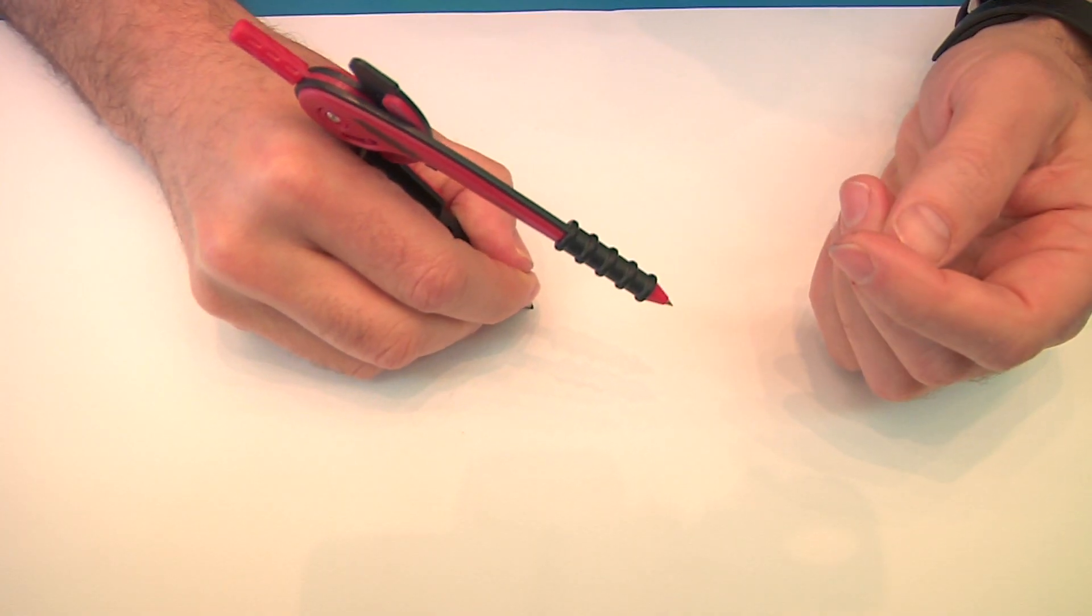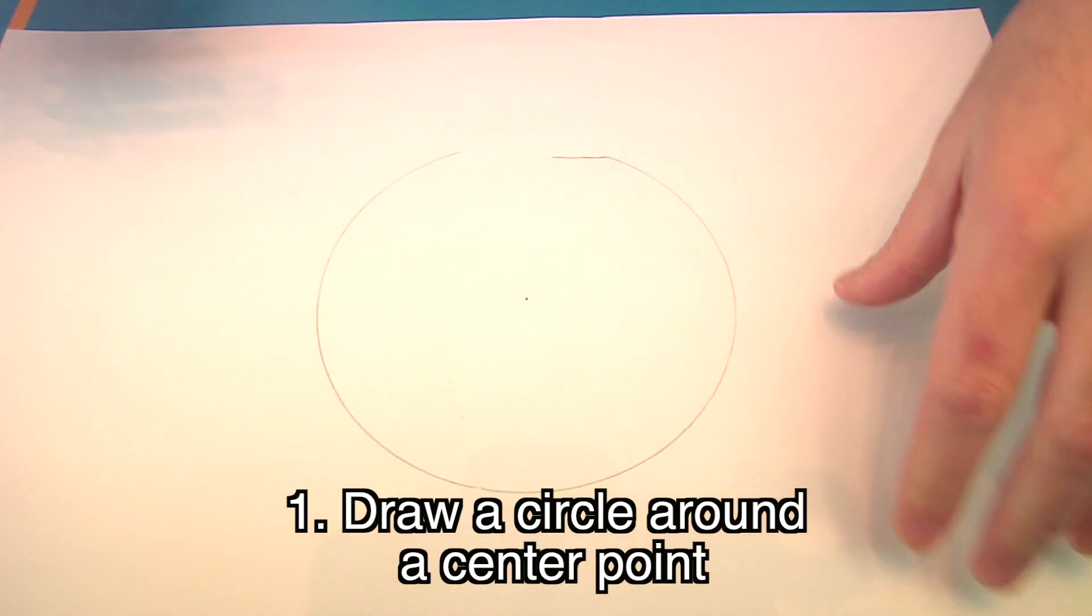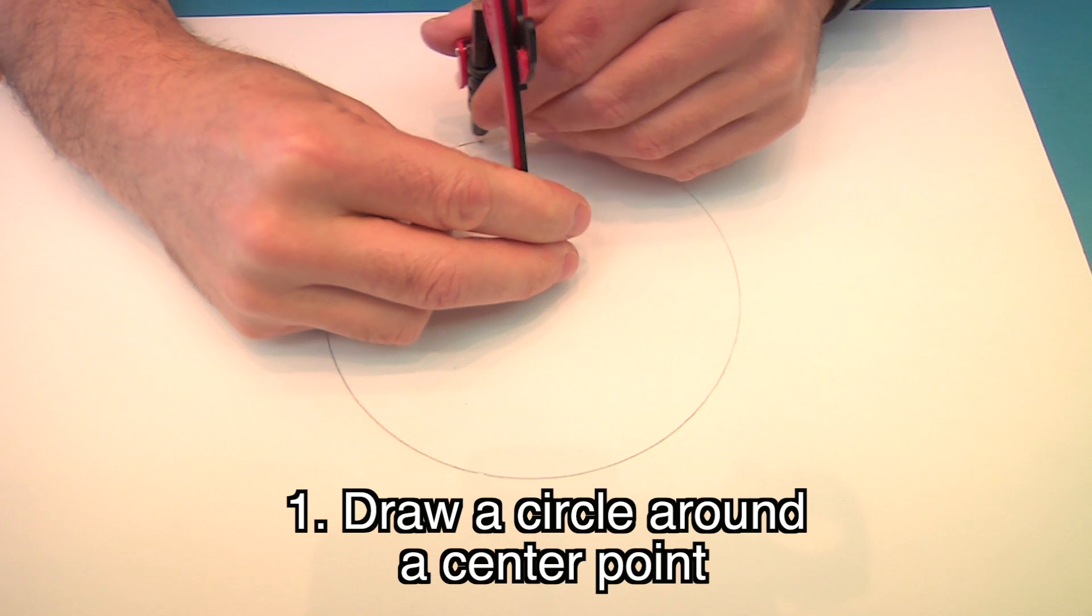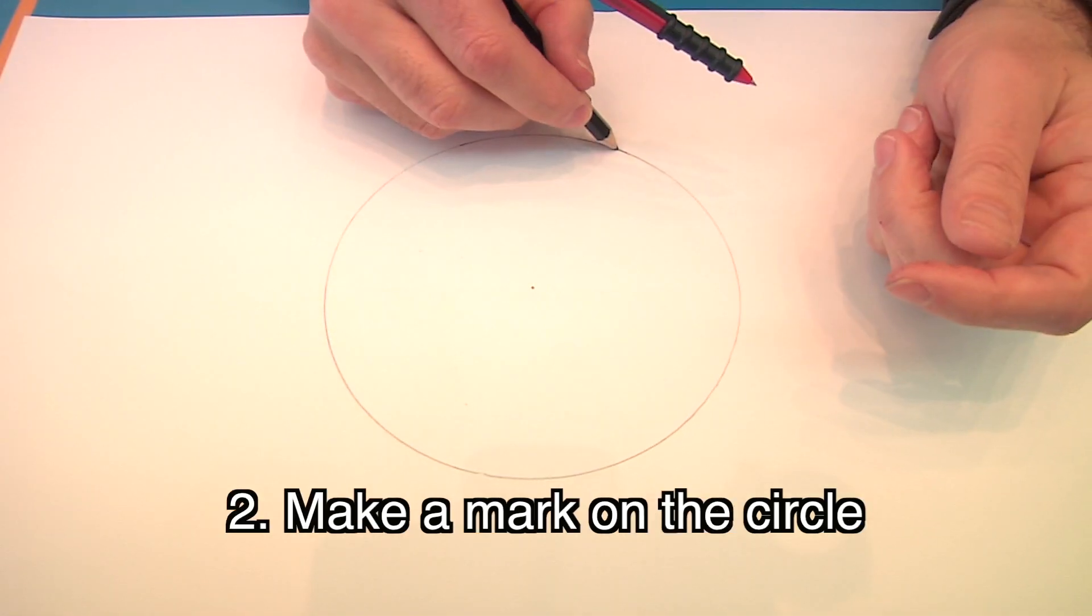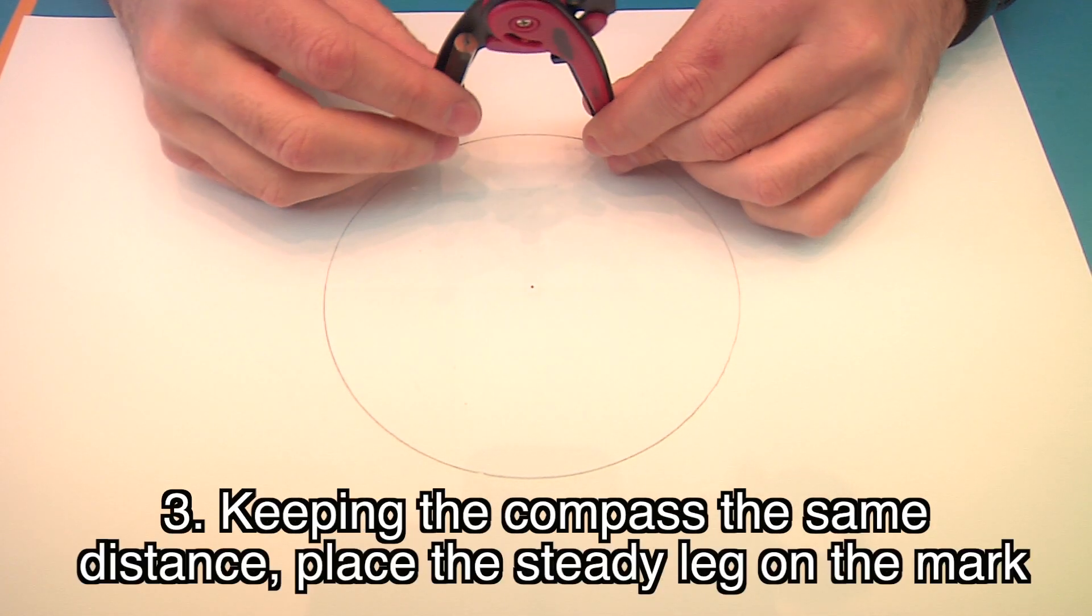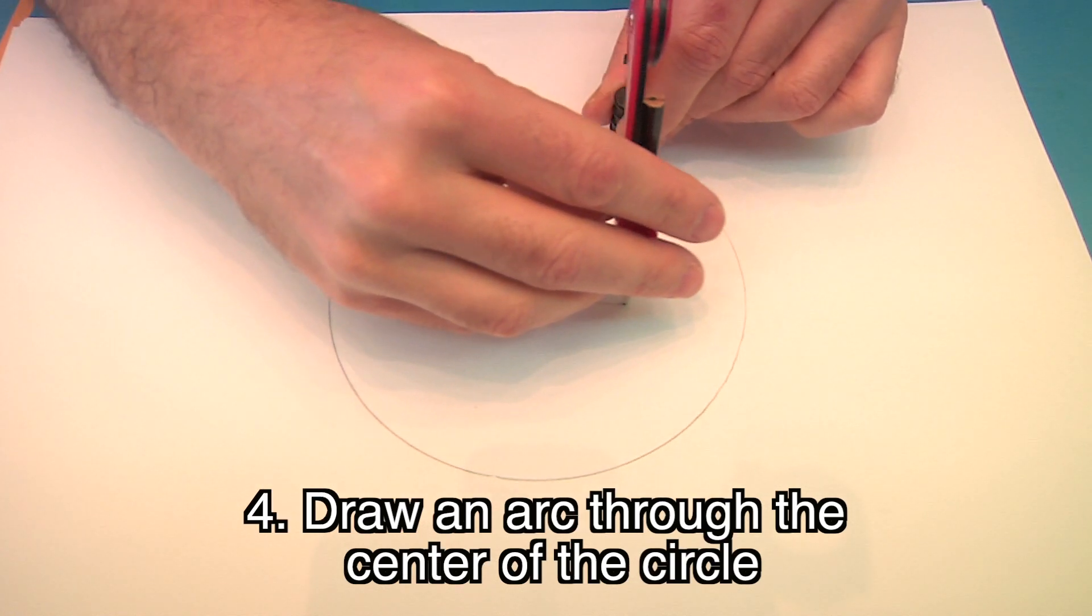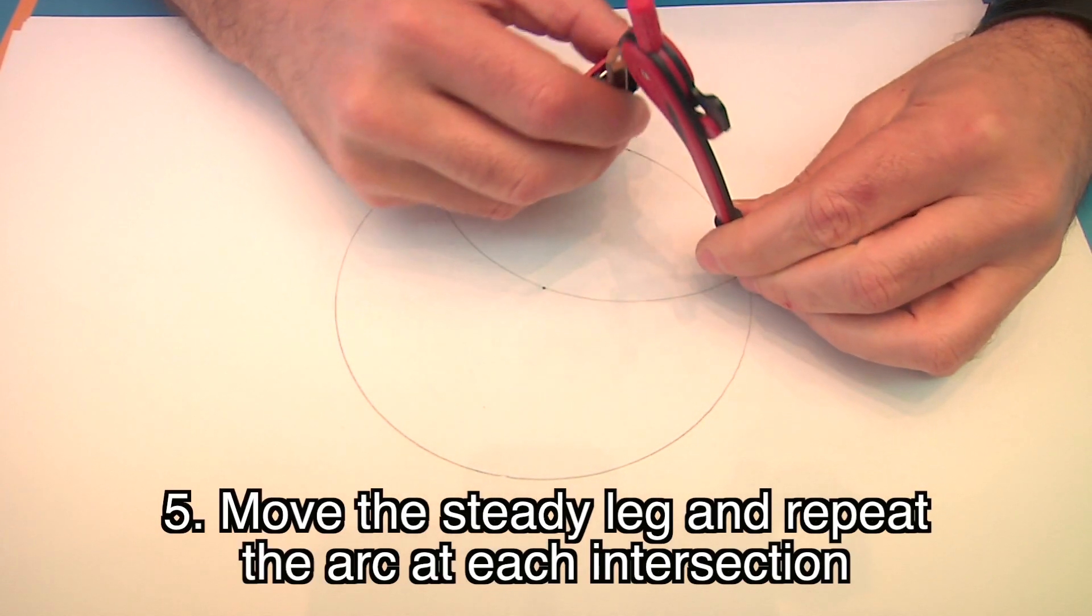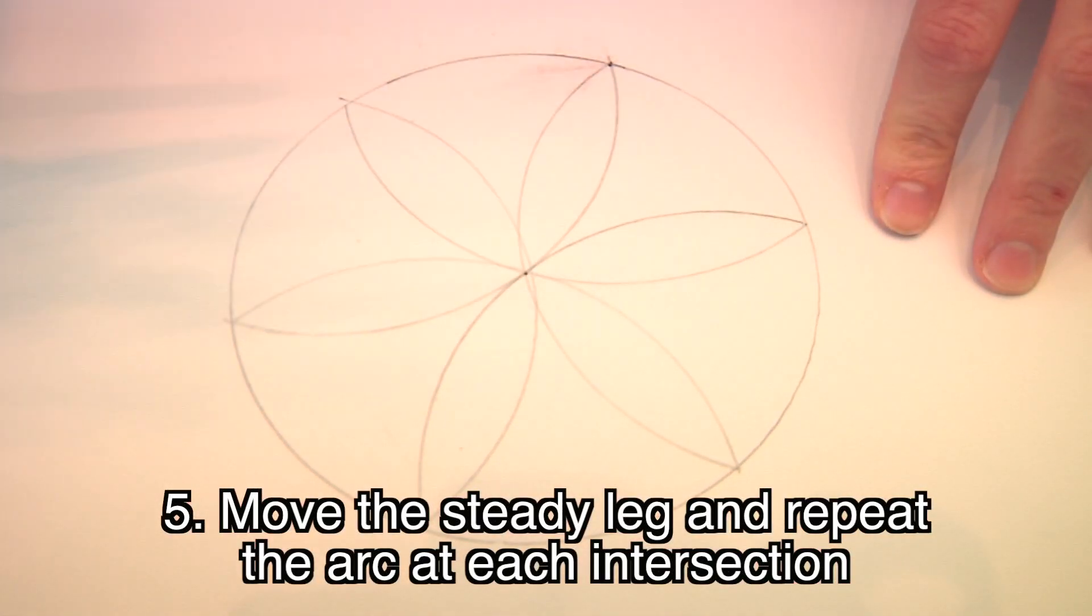For example, try this. First, draw a circle around the center point. And don't worry if your compass slips. You can always erase and just use your compass to start your circle over again. Just remember to always mark that center point. Make a mark on the circle. Then, keeping the compass the same distance, place the steady leg on the mark. This time, draw an arc through the center of the circle. Now, move the steady leg and repeat the arc at each intersection. And you'll end up with this cool-looking flower.